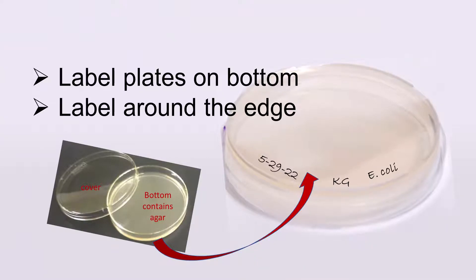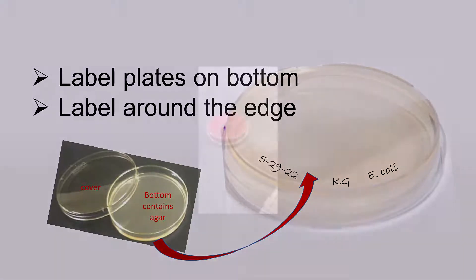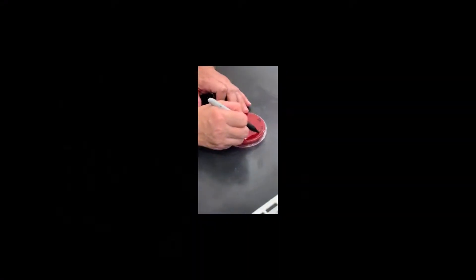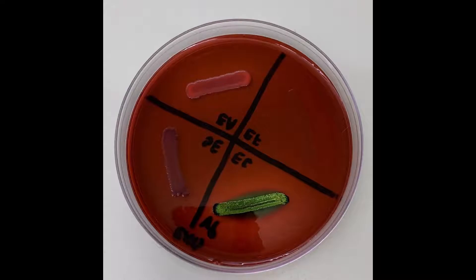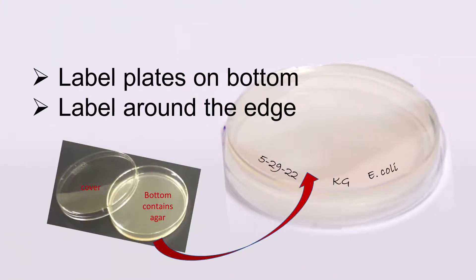Proper handling of plates includes things like labeling plates on the bottom. It's standard practice to include your initials, the date, and the initials of the microbe on the plate. Sometimes your instructor will specify other information too, perhaps your section number, the type of media, or where the sample is from. The reason we label on the bottom is because when more than one microbe is cultured on the plate at the same time, covers can get turned during incubation and that would lead to confusion. We always label around the outside edge so you have a clear view of your results without the ink obstructing your view.